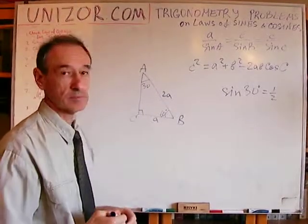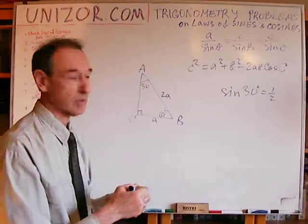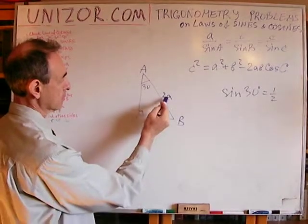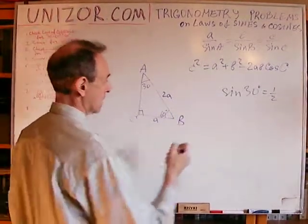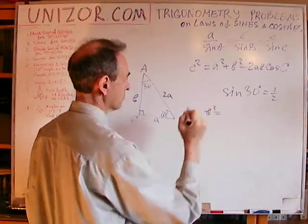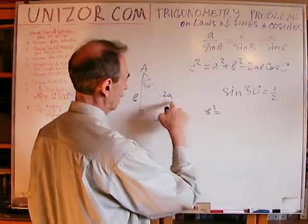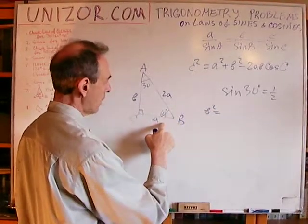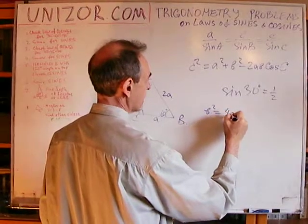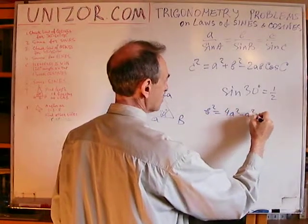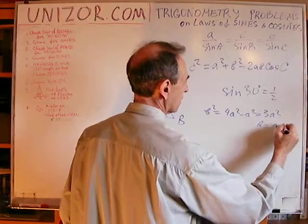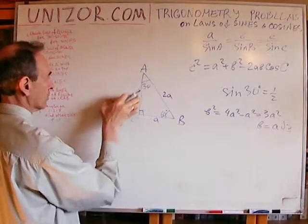What's the third side? Using the Pythagorean theorem: if a² + b² = c², then b² = c² − a² = 4a² − a² = 3a². So b = a√3.